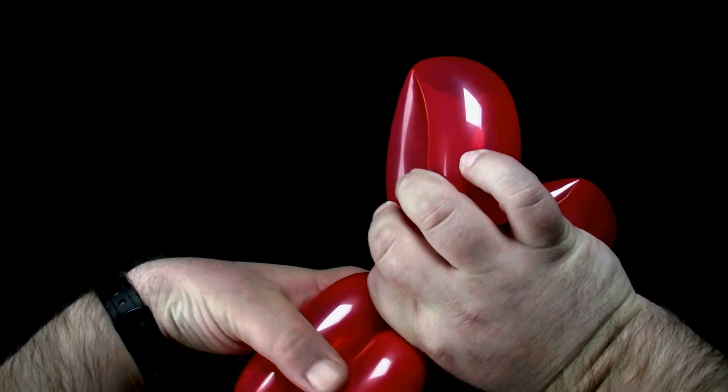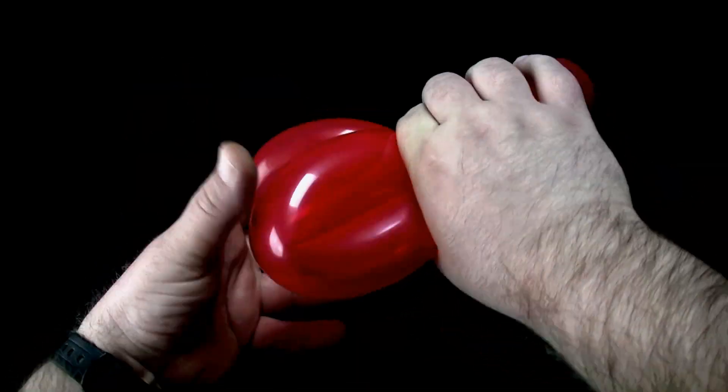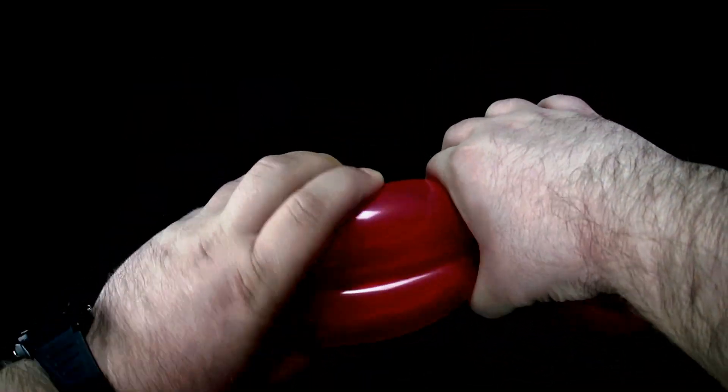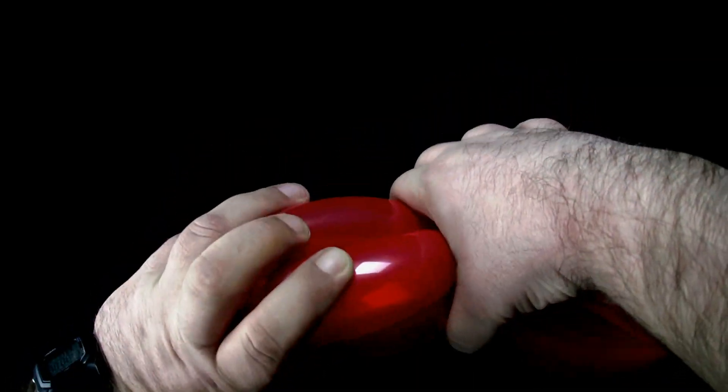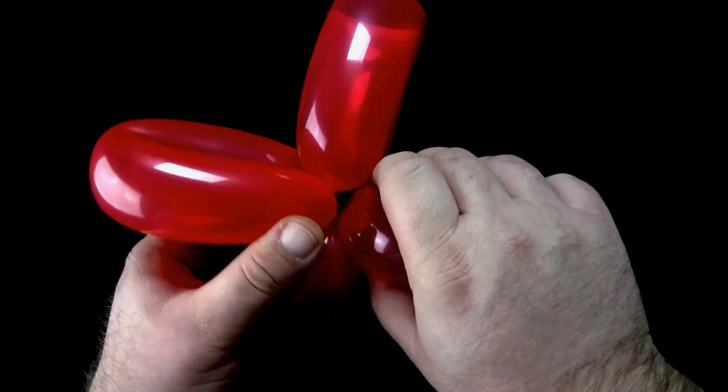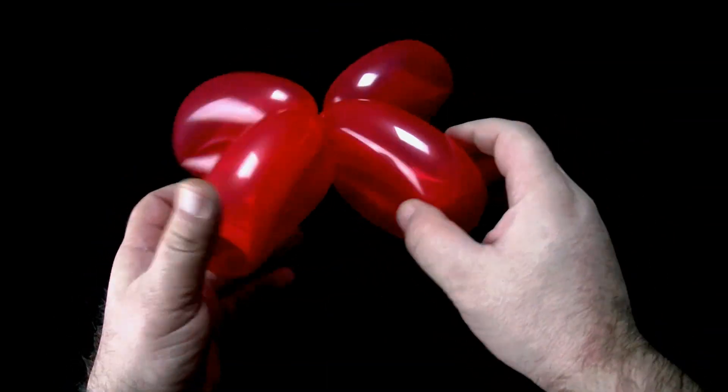Lock twist two of the loops together. You should now have four loops of equal size.